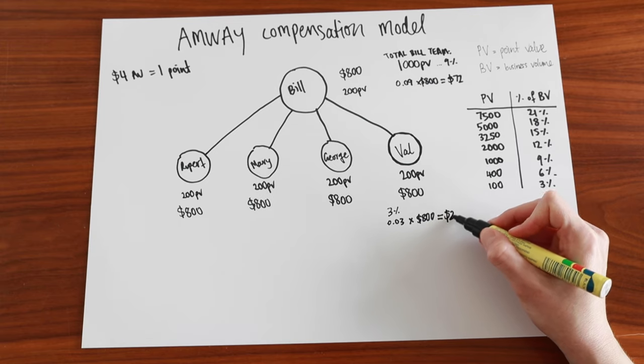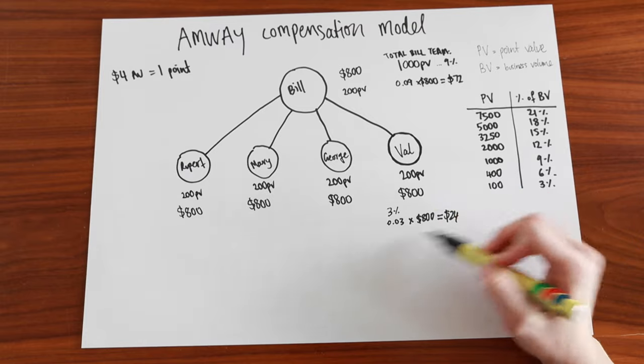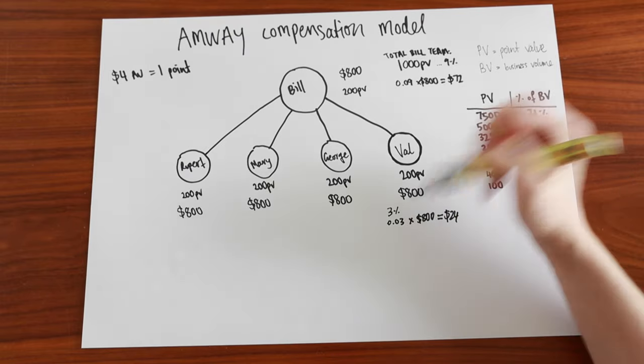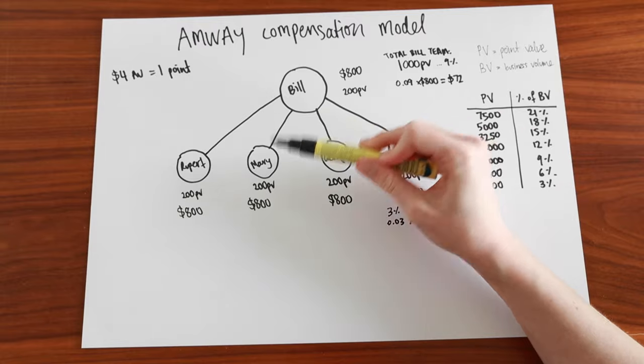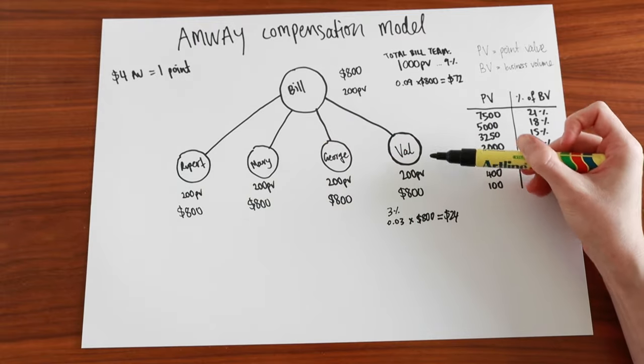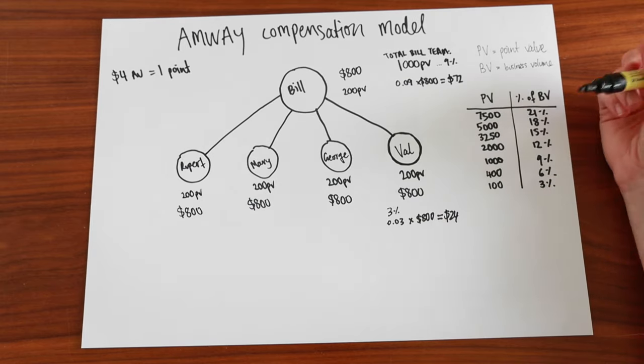In this model, we're assuming that none of these four people, so Rupert, Mary, George and Val, none of these people have people under them, just for the sake of this example.